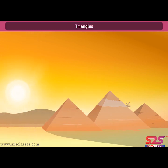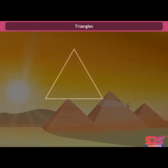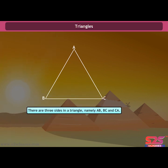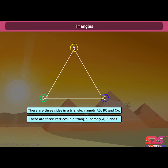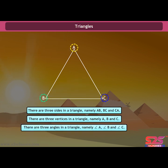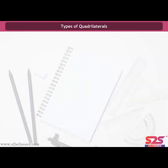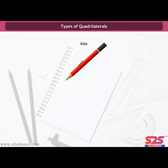Triangle: we are already familiar with the pyramids of Egypt — each face of a pyramid looks like a triangle. A triangle is a three-sided polygon; in fact, it is the polygon with the least number of sides. There are three sides in a triangle — AB, BC, and CA — three vertices: A, B, and C, and three angles: angle A, angle B, and angle C.